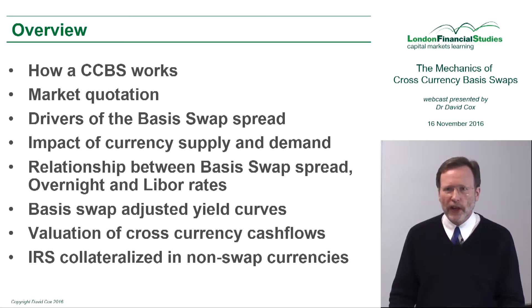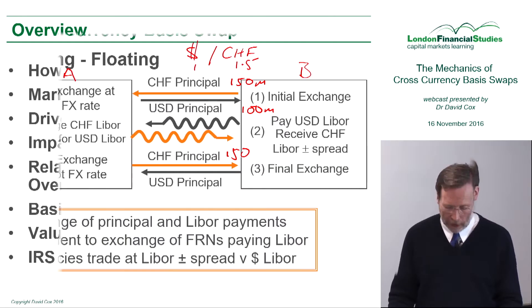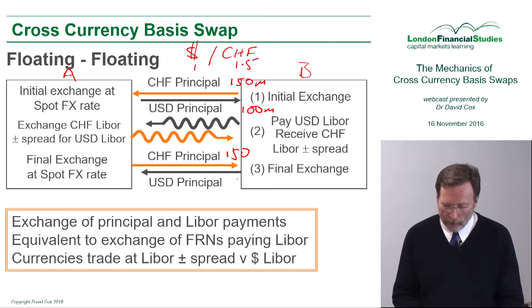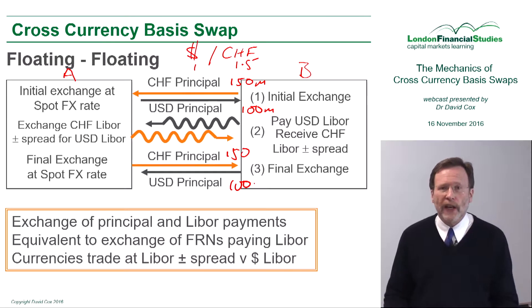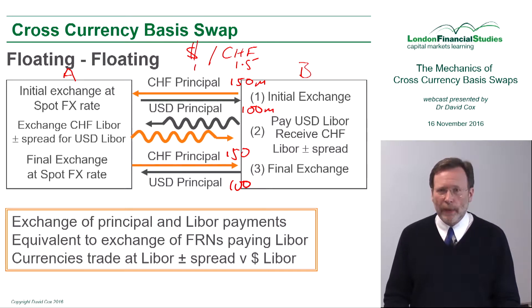What I'd like to do is have a look at the quotation of these swaps. Party B pays back to party A 100 million US dollars — those are the three stages of the cross currency basis swap. Now we need to think a little bit about this spread.